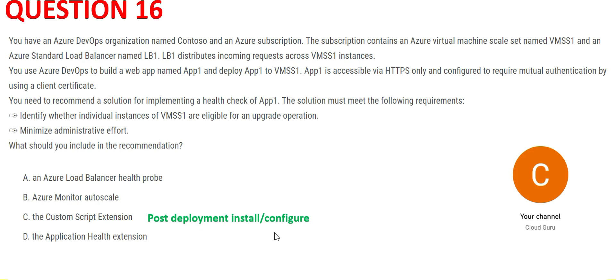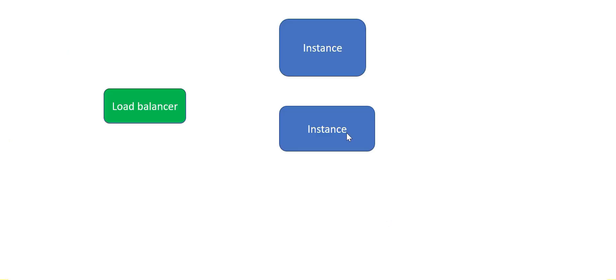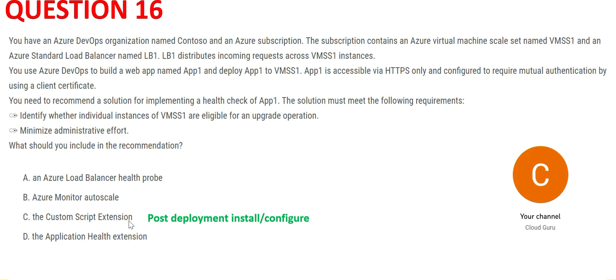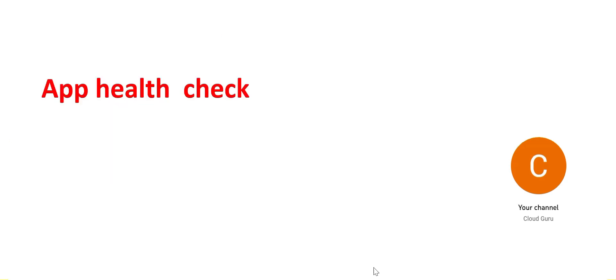Option C, Custom Script Extension, is very useful in post-deployment install/configure scenarios. For example, once instances are created, if you need to automatically install Tableau or configure DataStage, you create a custom script that runs the moment deployment is done. However, Custom Script Extension will not be useful for monitoring or doing a health check of an app.